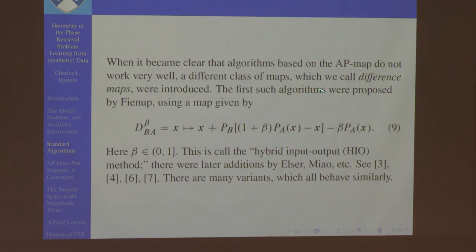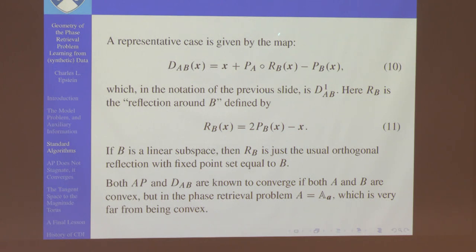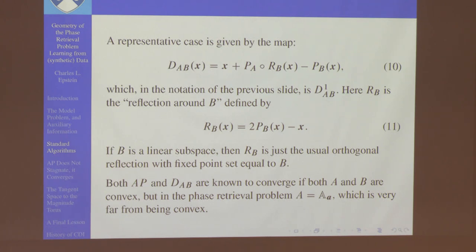The replacement was Jim Fienup's hybrid input-output algorithm maps — built out of combinations of the two projections and the previous iterate, traditionally with a parameter beta. I'll only talk about the case where beta equals one. What you do is reflect the point across the B set: the reflection is always defined by a standard formula, and if B happens to be a linear subspace then this is the usual orthogonal reflection that has B as its fixed point set. That combination is what we call the difference map algorithm.